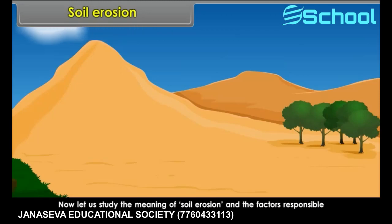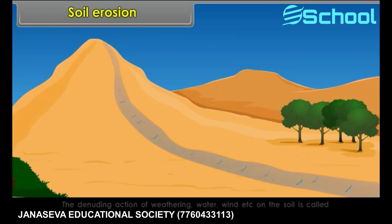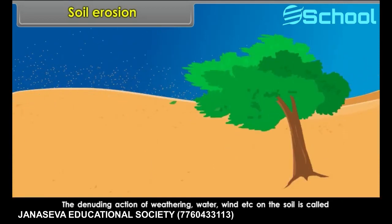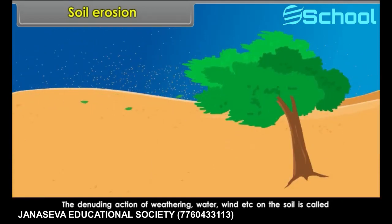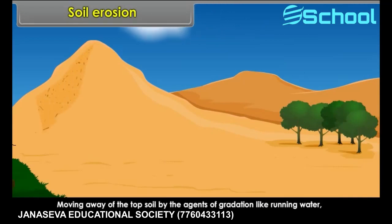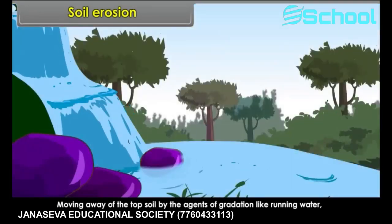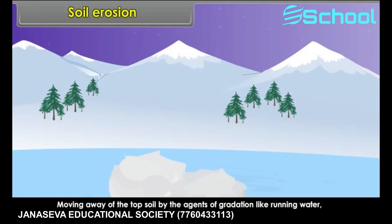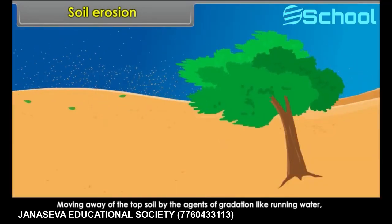Soil erosion. Now let us study the meaning of soil erosion and the factors responsible for it. The denuding action of weathering, wind, etc. on the soil is called soil erosion — in other words, the moving away of the top soil by the agents of gradation like running water, glaciers, and wind is known as soil erosion.